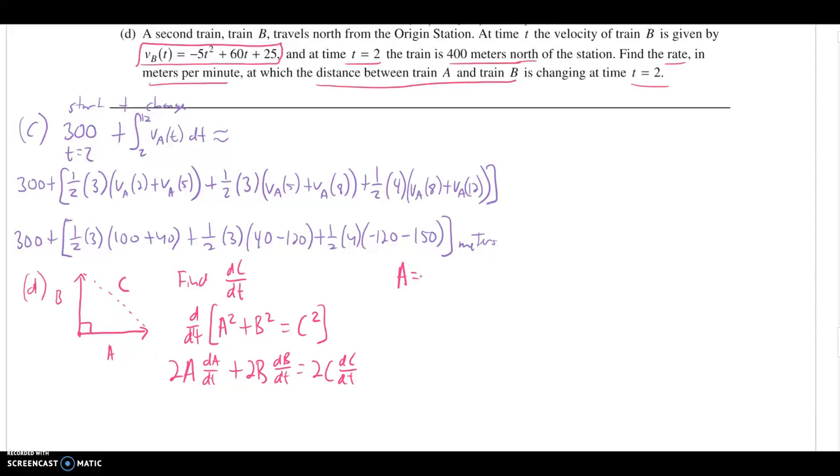Like the distance for A. We need to know how far train A has actually traveled at time two. That was back up in part C. Part C set at time two, train A was 300 miles from the station. Train B, it tells us in this part, is 400, not miles, meters. 400 meters from the station. And the distance between, either by using Pythagorean theorem or remembering your Pythagorean triples, it would follow that that is 500 meters. And again, you could use the 300 and 400 and confirm it back in Pythagorean theorem.